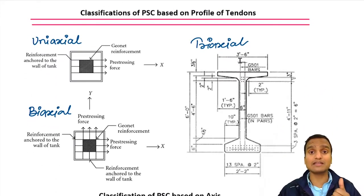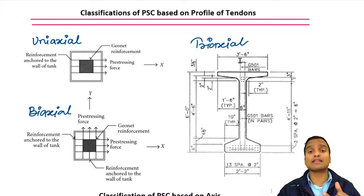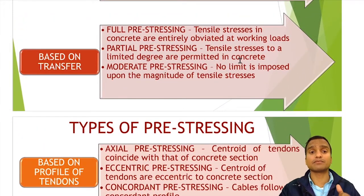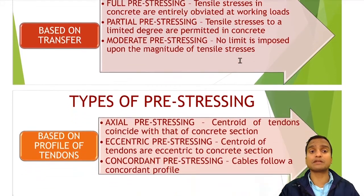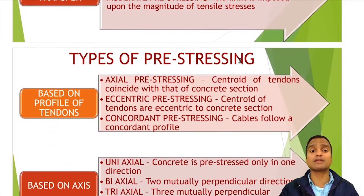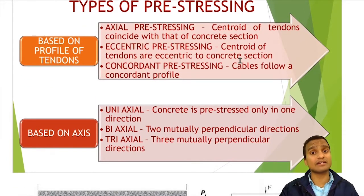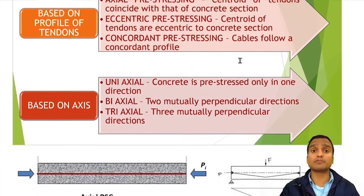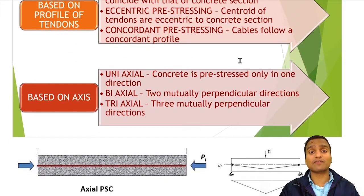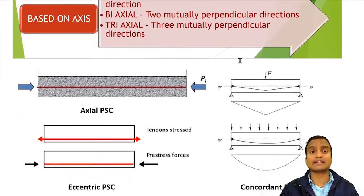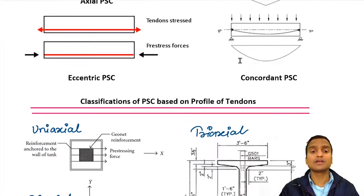To summarize, there are four bases of classification of pre-stressed concrete. One is based on bonding: bonded PSC and non-bonded PSC. Then based on transfer: full pre-stressing, partial pre-stressing, and moderate pre-stressing. Third, based on the profile of tendons: axial, eccentric, and concordant. And fourth, based on the number of axes: uniaxial, biaxial, and triaxial.